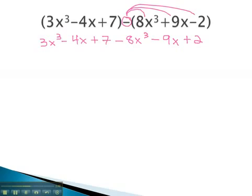Now, it works like an addition problem, where we combine like terms. 3x cubed is like the negative 8x cubed, giving us negative 5x cubed.